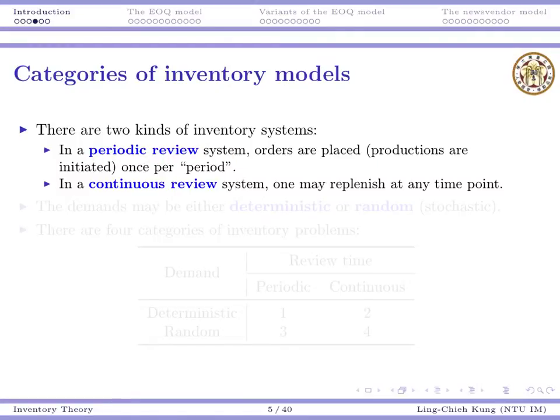In a periodic review system, orders are placed or productions are initiated once per period. For example, if you are running a factory and each day you can initiate a production lot — in each day you can do it once — then we say you are in a periodic review system.